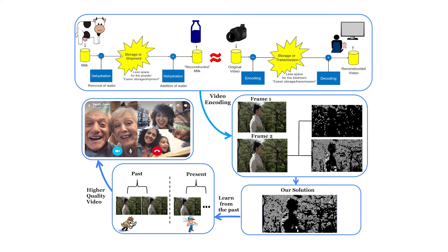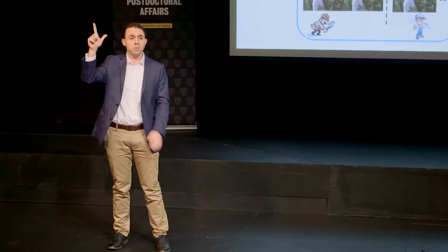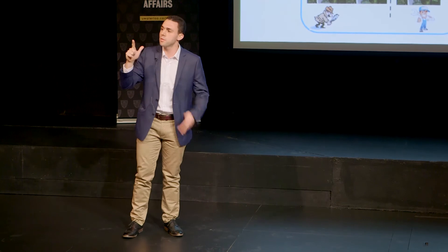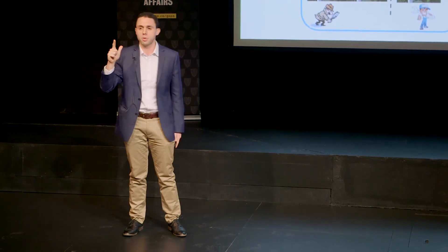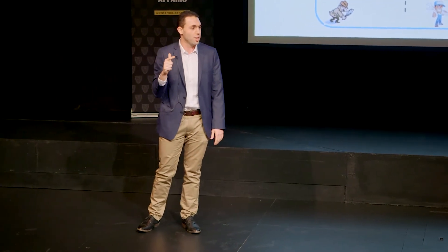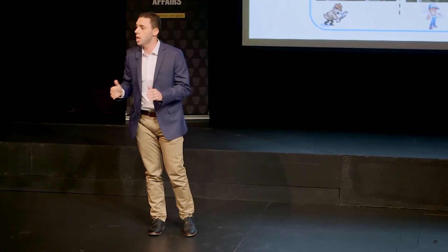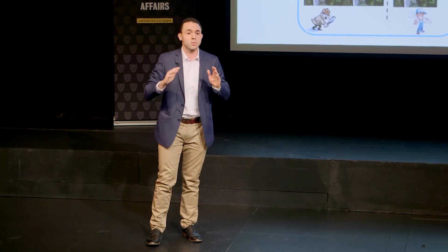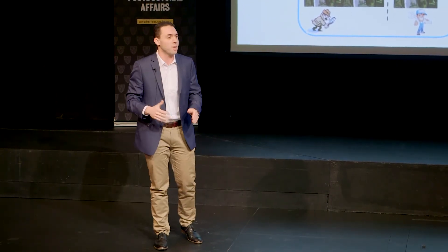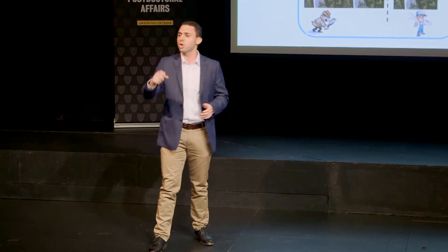Currently, there are two strategies for generating those residuals. One, the aggressive way — shown as the black picture on top — removes the majority of the content details of the residuals. It's good for the size, but will produce poor quality, and you do not want that. Two, the non-aggressive way preserves as much content details as possible from the residuals. That one will produce high quality, but it will have a huge video size that will go over the channel's cap, leading to a call drop, and you do not want that either.